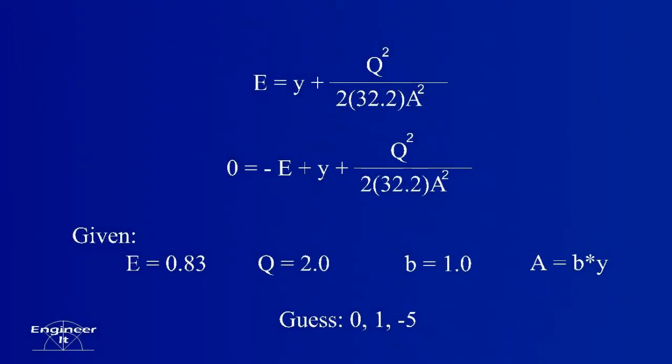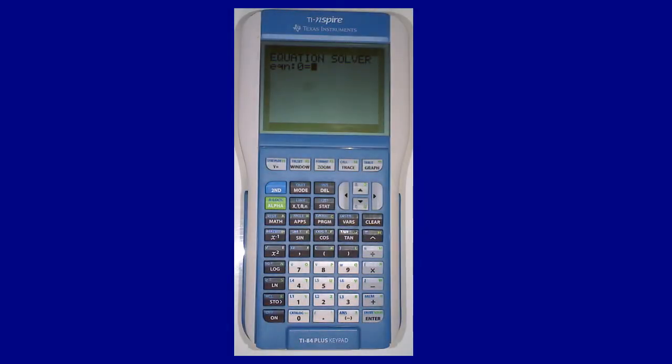The final example will be a more complicated equation. Solve this equation for 0, return to the solver screen and plug the equation into the solver. Guess 0 and press ALPHA ENTER to start solver. Solver returns a value of 0.366.